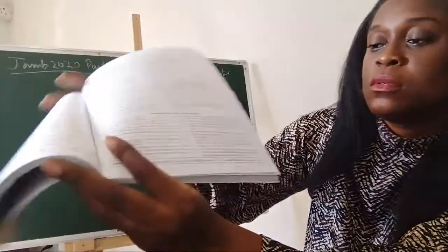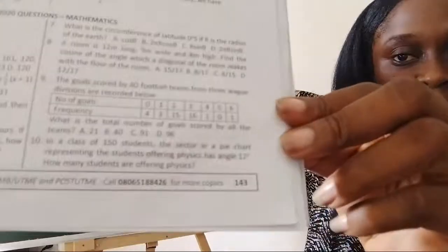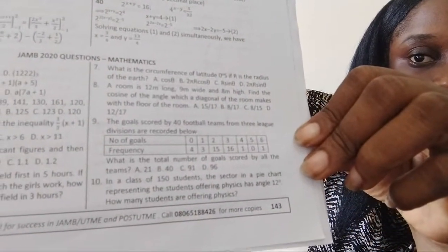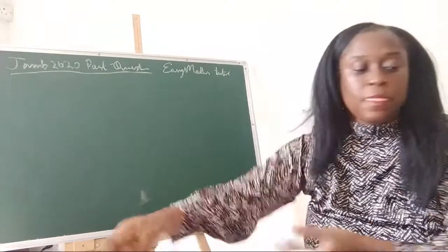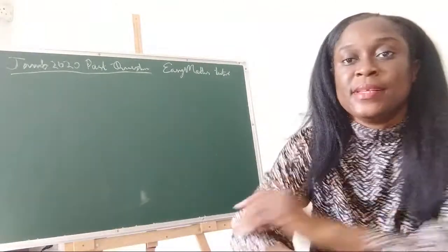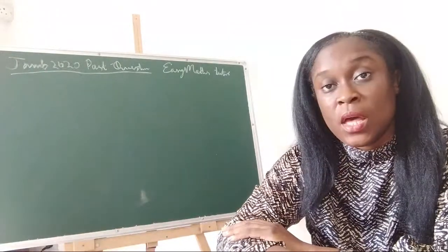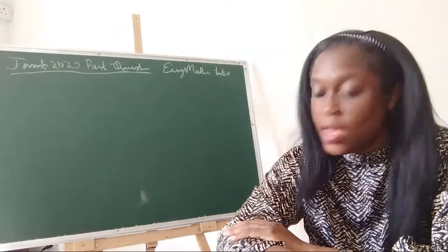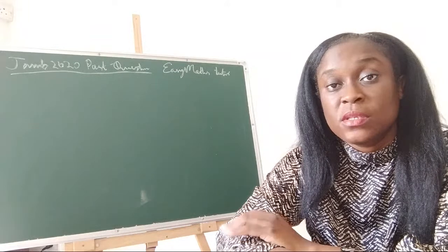I want us to look at question 8. Can you see it? Okay, question 8 — that's it. Pick out your paper and pen and let's work on this together. It says: a room is 12 meters long, 9 meters wide, and 8 meters high.